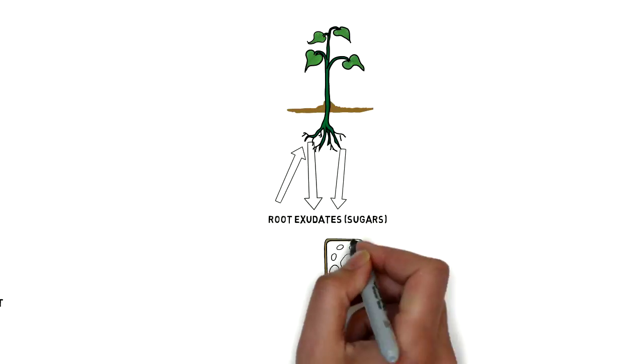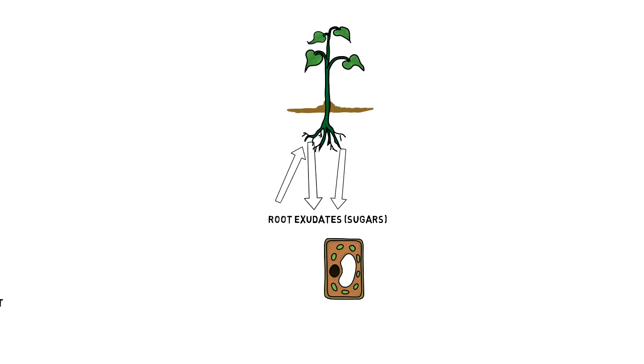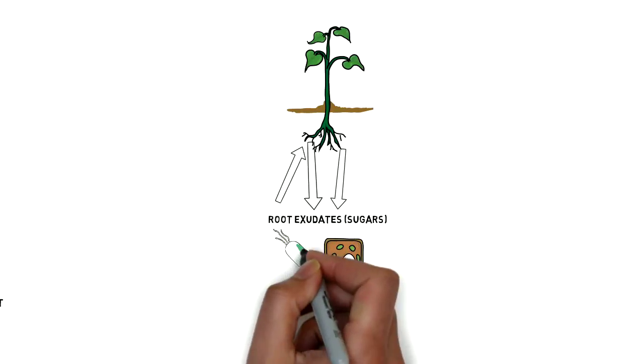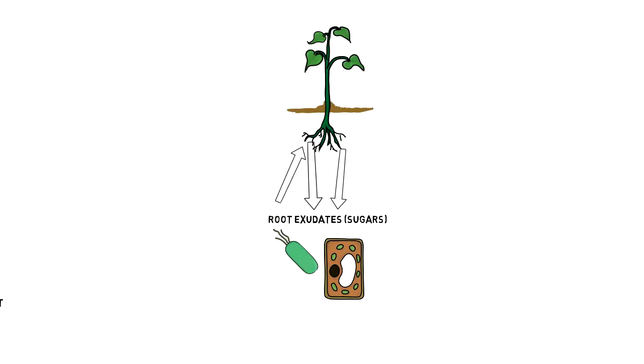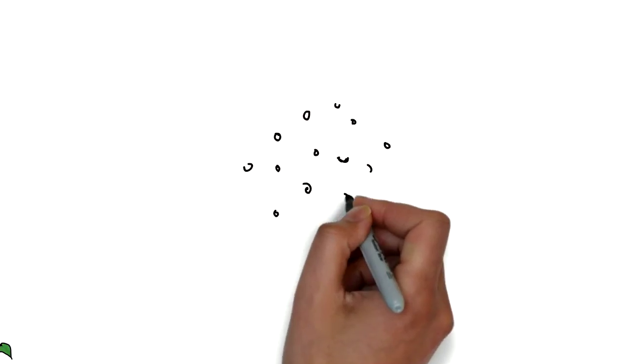When a plant needs, let's say, a little bit of zinc, it will send certain sugars through its roots to feed a certain type of bacteria that's able to release zinc. So the plant takes up the zinc and can continue growing without being stressed. When it needs copper, it will feed the copper-releasing bacteria, and the bacteria will mineralize the copper and the plant will take it up. It's like the plant is almost incentivizing different kinds of organisms into slavery, depending on your viewpoint.